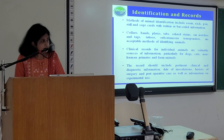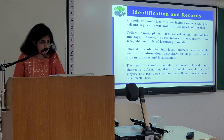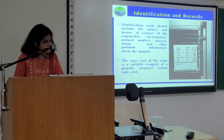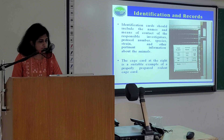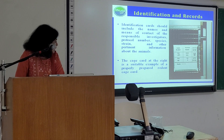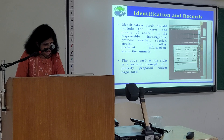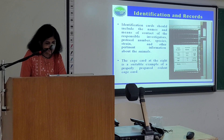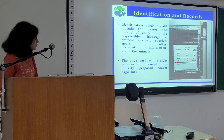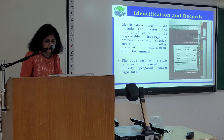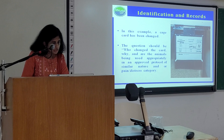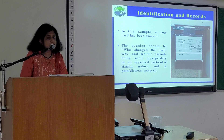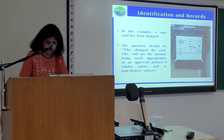The record should include pertinent clinical and diagnostic information, date of inoculations, history of surgery, postoperative care, and information on experimental use. The identification card should include names and means of contact of the responsible investigators, protocol number, species, strain and other pertinent information. A properly prepared case card contains investigator's name, protocol number, date of election, sex, and cage date. If a case card has been changed, the question should be: who changed it, why, and are the animals being used appropriately in an approved protocol of similar pain or distress category.